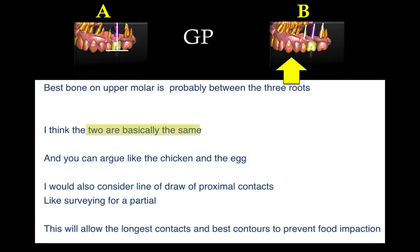Another general practitioner said they're essentially the same — A or B — but to consider the proximal contacts and the draw of the restoration, assuming a screw-retained crown. This was the first time I heard the word 'draw' — making sure the restoration has the longest contacts and best contours to prevent food impaction. That's a step further: not just safety and occlusal loading, but also better contacts and better restoration contours.